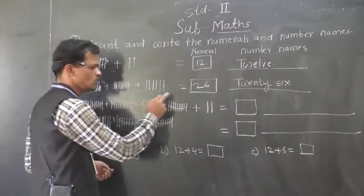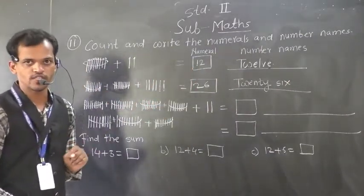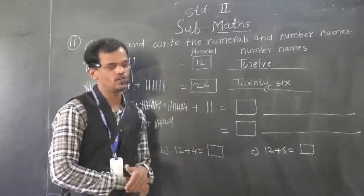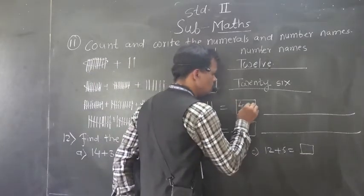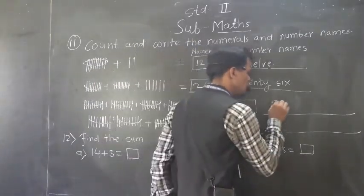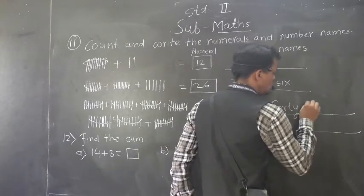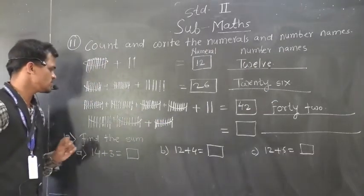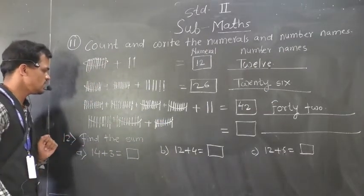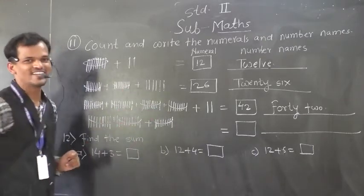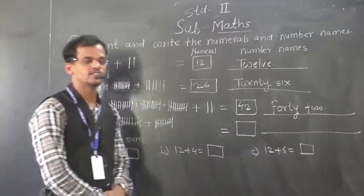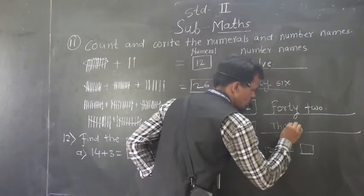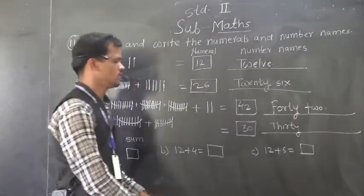And then, 2, 3, 4. 4 tens. 4 tens means 4 tens and 2 single pencils means 4 tens. So, write here, 4 tens 2, and write the spelling of 20 plus 4 tens. Then next, how many bunches or 10 pencils? 1, 2, 3. 3, 3 tens. So, 3 tens means 30. Here write the spelling, T-H-I-R, T-Y, 14.